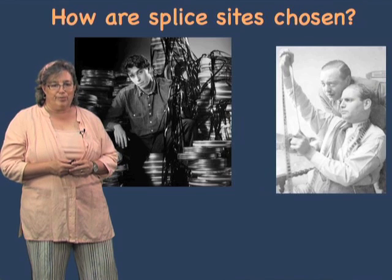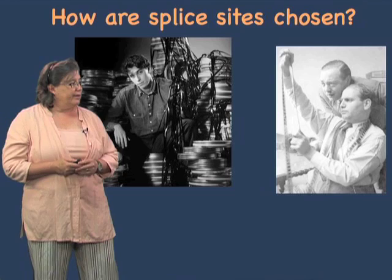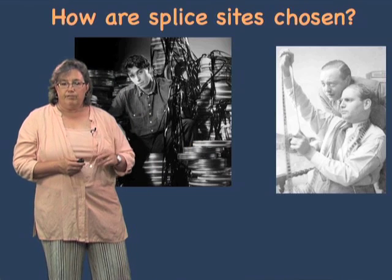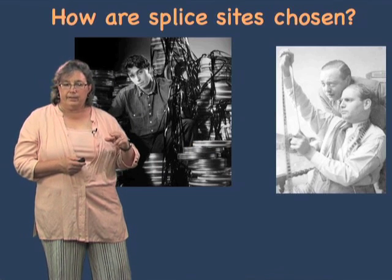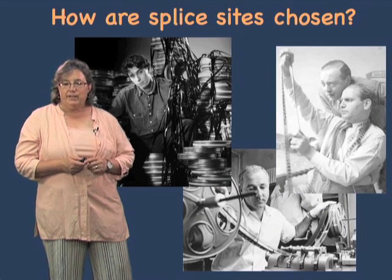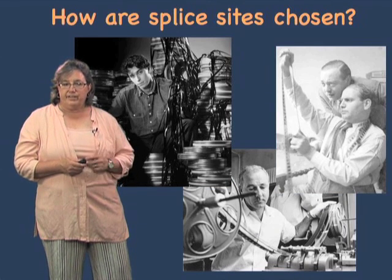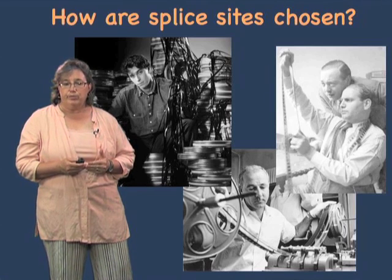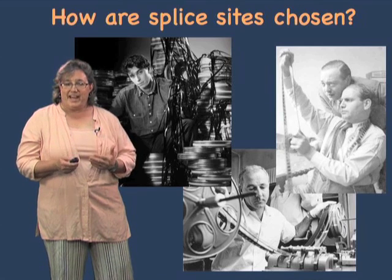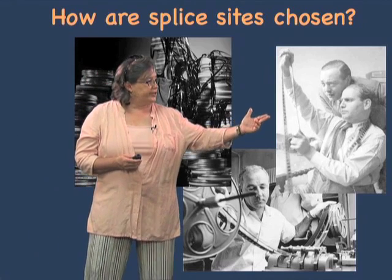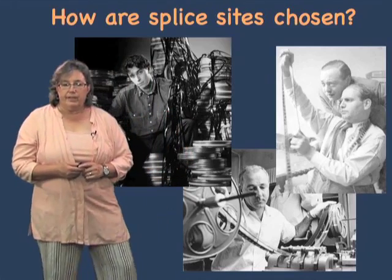Traditionally with film, before the digital age, the film director would go through the film frame by frame, find exactly the place where he or she wanted to make a cut, and then there would be a splicing machine that would literally cut and splice the film back together to make the final version of the movie. In cells, that's exactly what happens, because introns are made up of individual nucleotides, and the nucleotides are very much like the individual frames in a film.